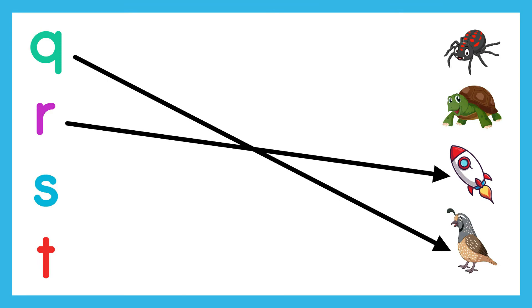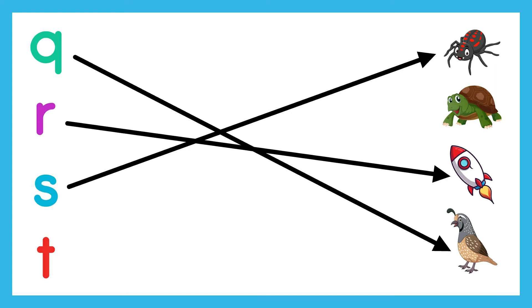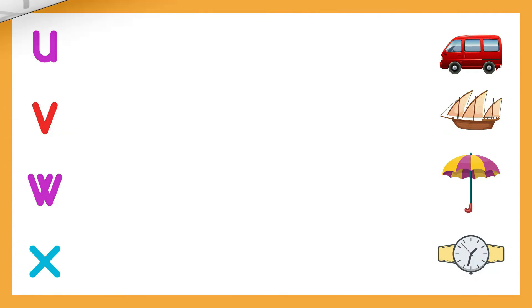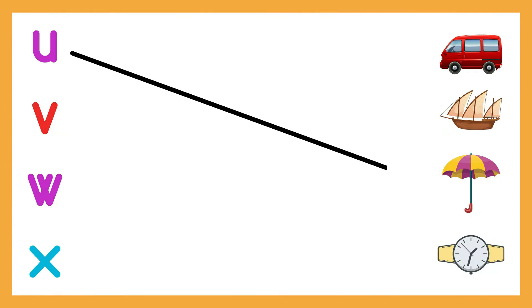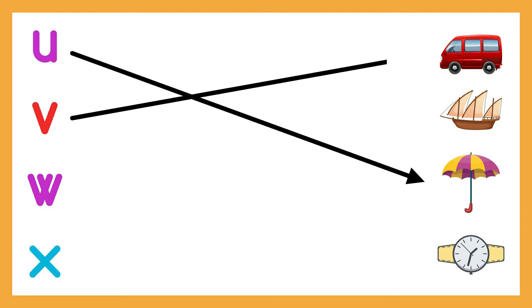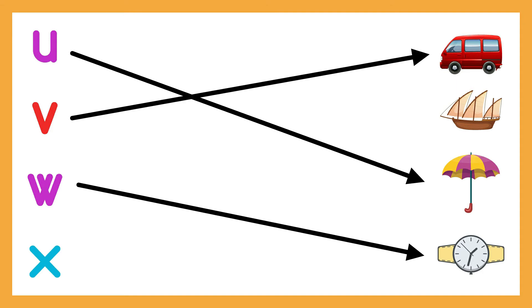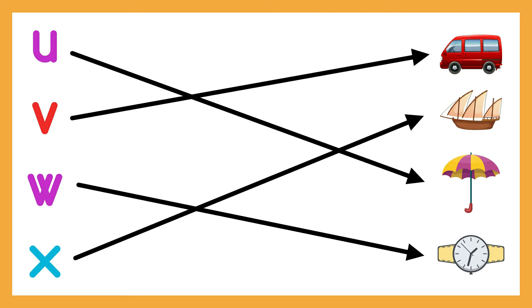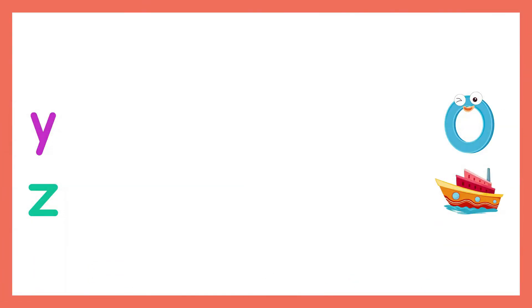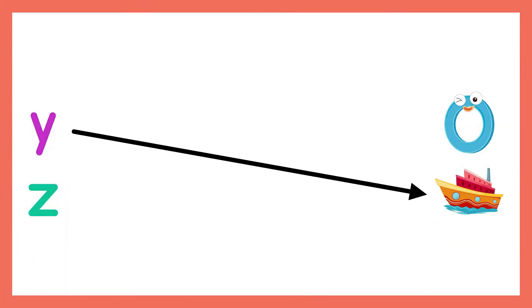R - Rocket. S - Spider. T - Turtle. U - Umbrella. V - Van. W - Ports. X - Seabed. Y - Yacht. Z - Zero.